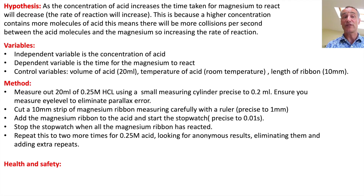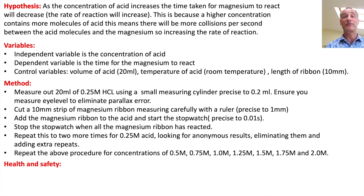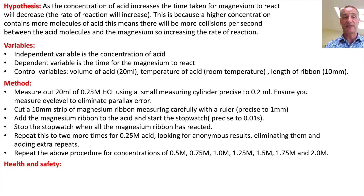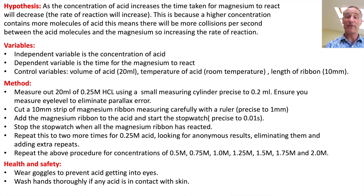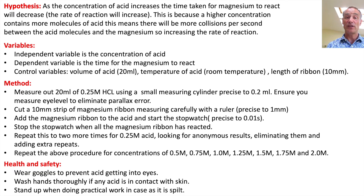Finally, repeat the whole procedure for different concentrations, making sure you have a range and at least five values — just say 'repeat the above procedure for the following concentrations.' For health and safety, it doesn't have to be in a lot of detail; they're looking for basic understanding. Wear goggles to prevent acid getting in your eyes. Wash hands thoroughly if acid comes into contact with skin. Stand up when doing practical work in case of spills. Those are really all you'd need to cover health and safety.